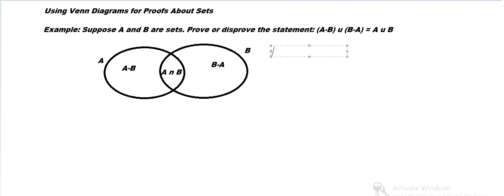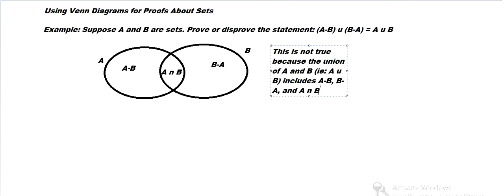So that's the union of A and B. So A minus B. So this is not true because the union of A and B, that is A union B, includes A minus B. So everything in A that's not in B. Then B minus A, everything in B that's not in A. And A intersect B.